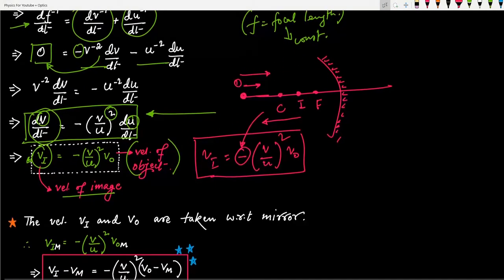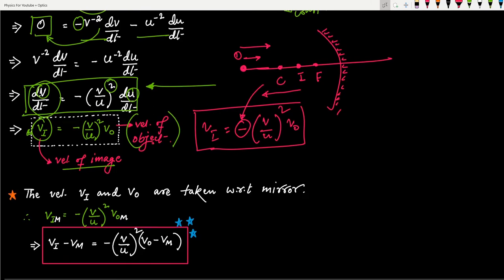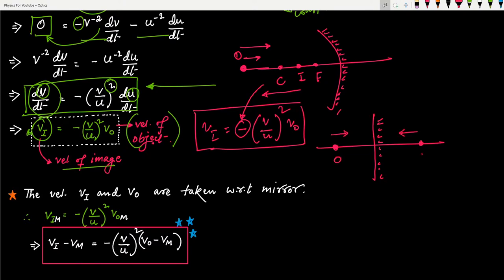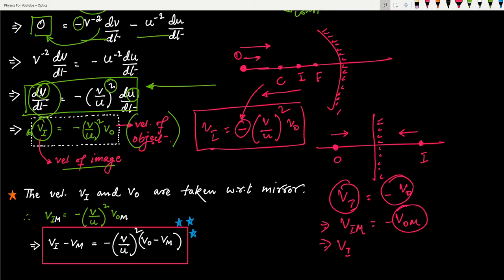The velocity of the image and velocity of the object in this formula are taken with respect to the mirror. From the previous video on plane mirror, we said that vᵢ equals minus vₒ actually means vᵢₘ equals minus vₒₘ — velocity of image with respect to mirror equals minus velocity of object with respect to mirror. Using the kinematics formula vₐᵦ equals vₐ minus vᵦ, we wrote vᵢₘ as vᵢ minus vₘ, and vₒₘ as vₒ minus vₘ.